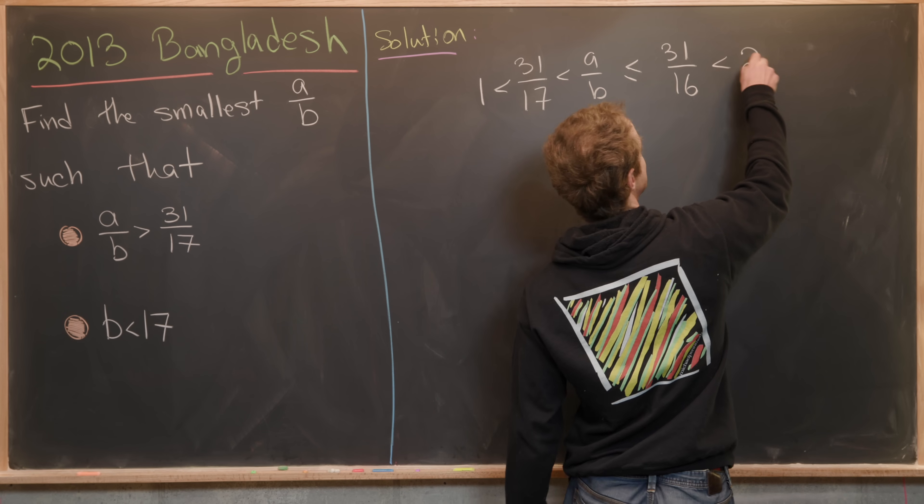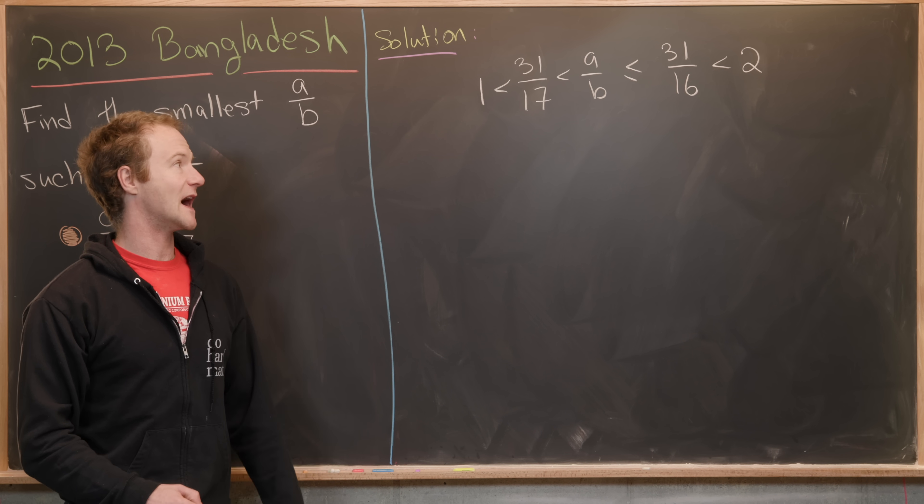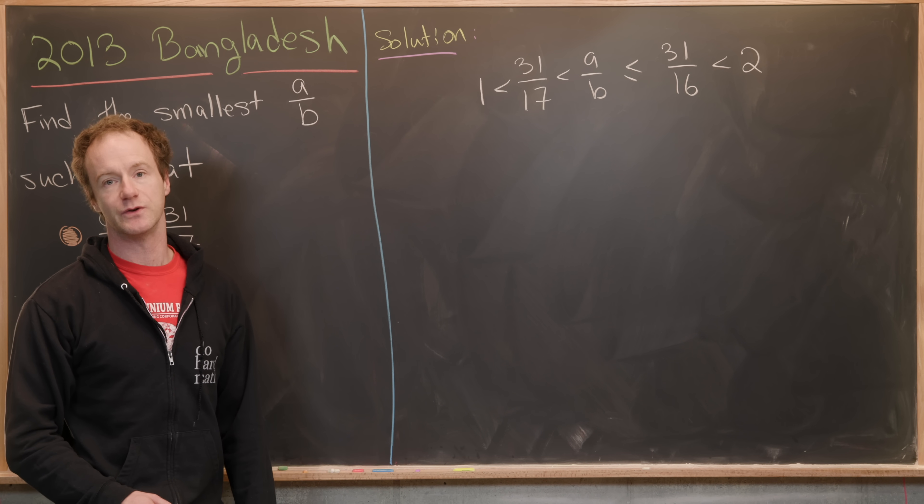But this is strictly less than 2, so that tells us A over B lies between 1 and 2.